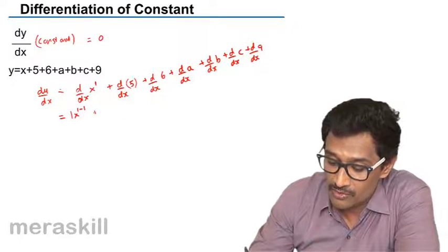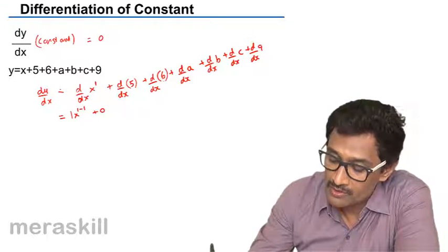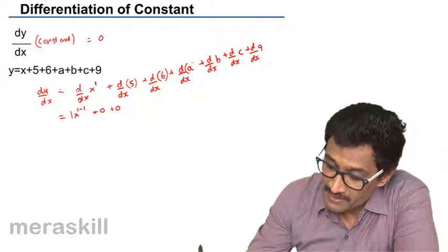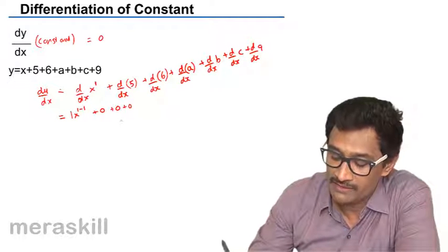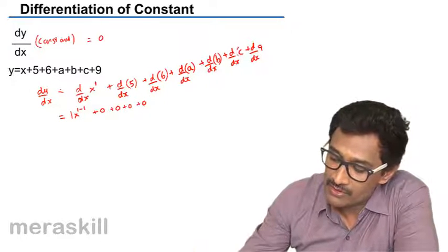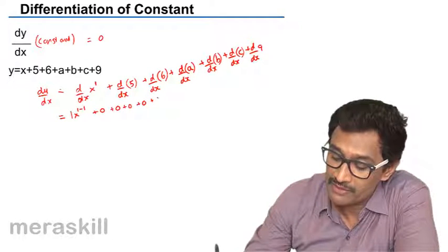This is nothing but a constant, so this is going to be 0. This is a constant, so its derivative will be 0. This is a constant, its derivative is 0. This is a constant, its derivative is 0.